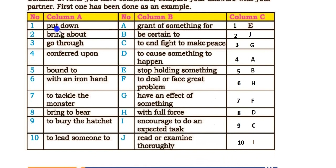Number 1: Put down — E — stop holding something. Number 2: Bring about — read or examine thoroughly. Number 3: Go through — G — have an effect on something. Number 4: Confer upon — A — grant something for. Number 5: Bound to — B — be certain to.